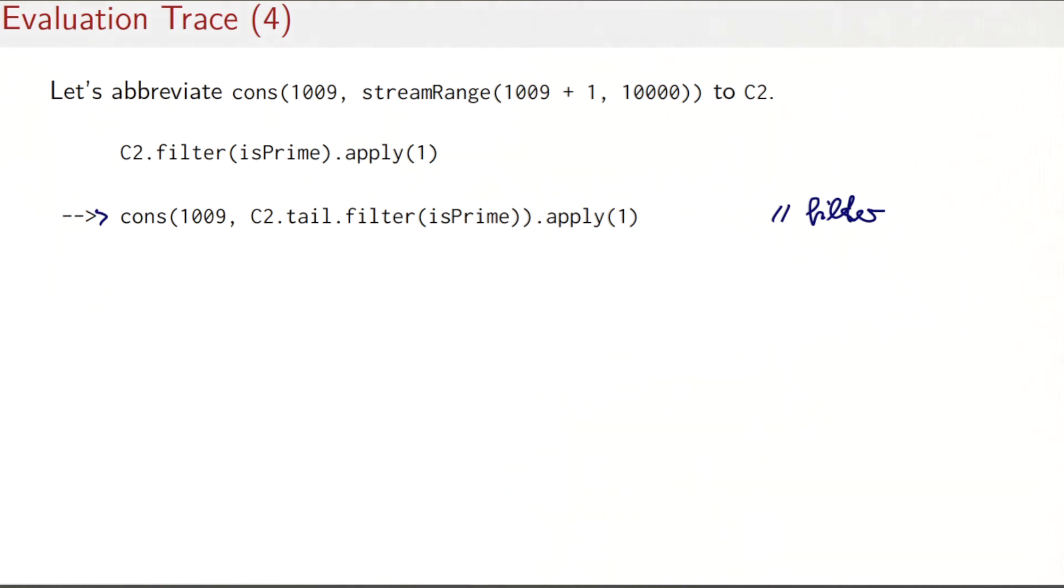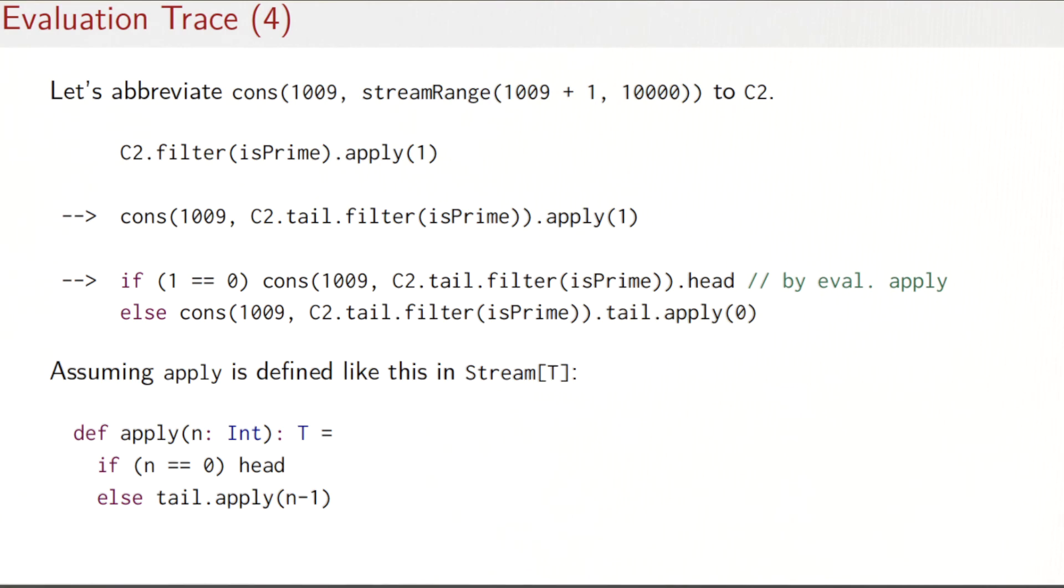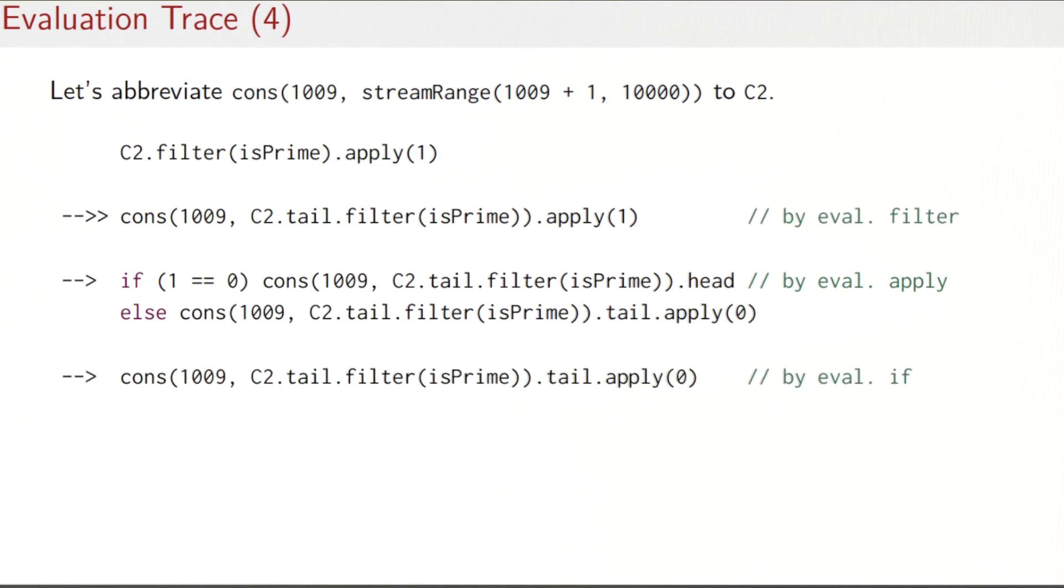So the next thing to evaluate is the call of the apply function on this cons expression here. I've plugged in here the definition of apply, which I have given you below—it's the usual definition, what you would expect. So we are left with an expression like this one here, which is an if-then-else. It asks whether 1 equals 0, which is false, so that would simplify to the second part of the if-then-else, which you see here.